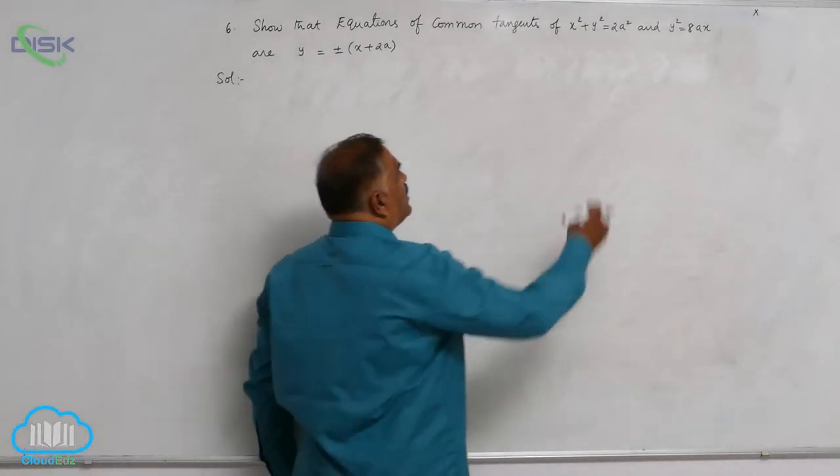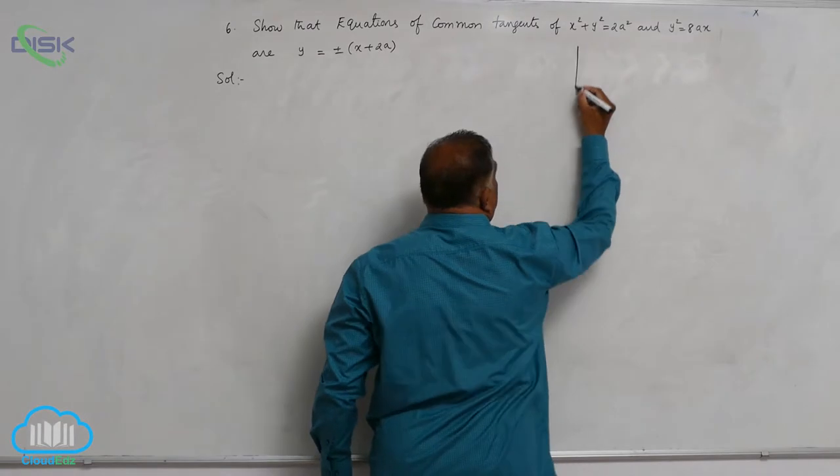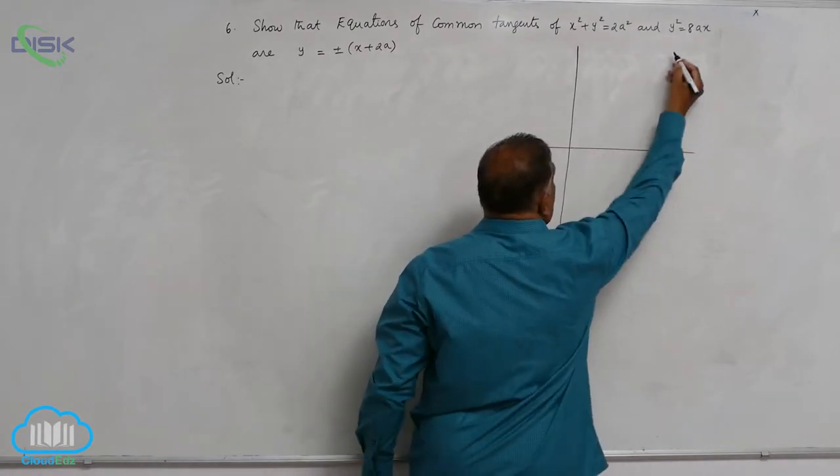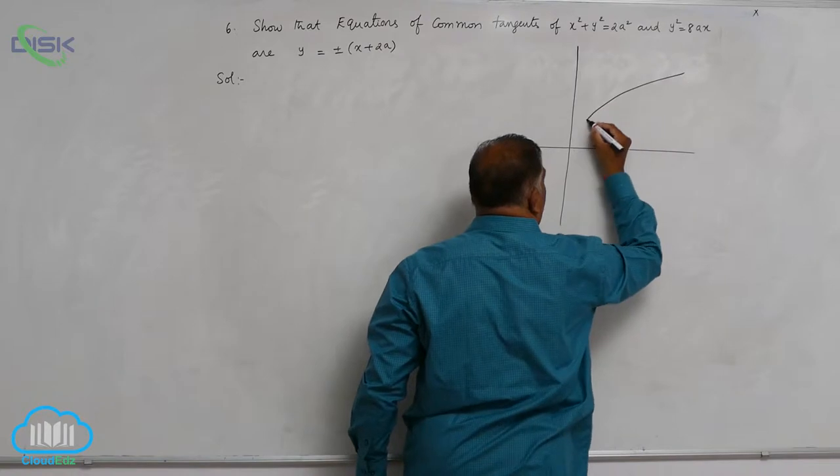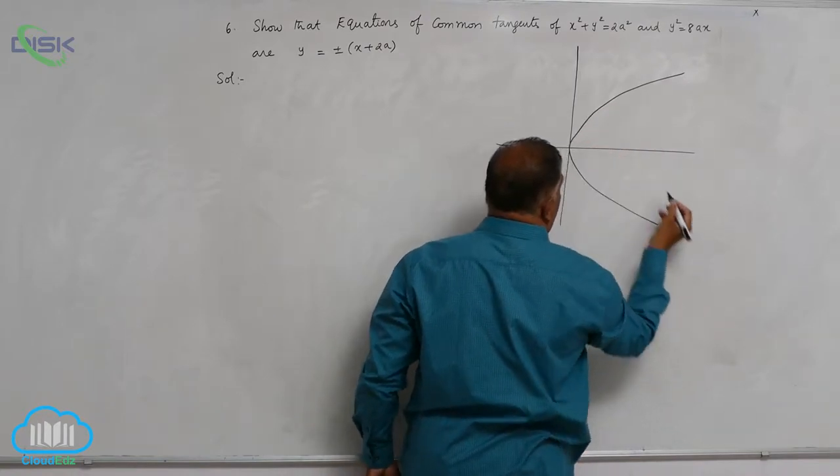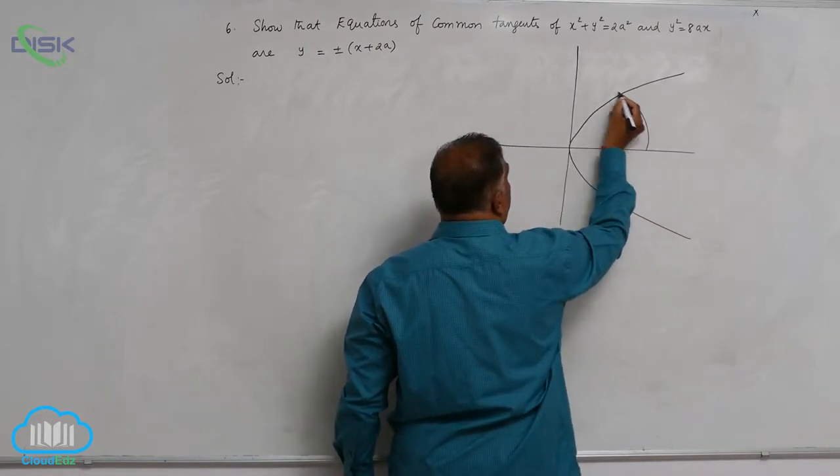Now by nature you can see this is the coordinate axis and parabola will be like this and circle will be almost like this only.